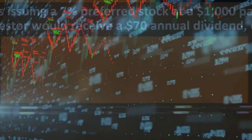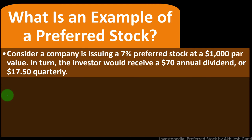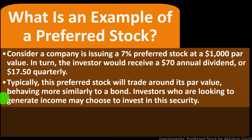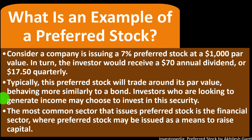What is an example of preferred stock? Consider a company issuing 7% preferred stock at a $1,000 par value — the investor would receive a $70 annual dividend, or $17.50 quarterly. This preferred stock will typically trade around its par value, behaving similarly to a bond. Investors looking to generate income may choose to invest in this security. The most common sector that issues preferred stock is the financial sector, where it may be issued as a means to raise capital.